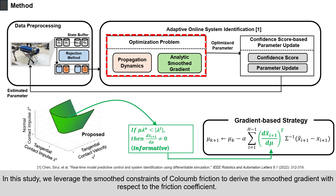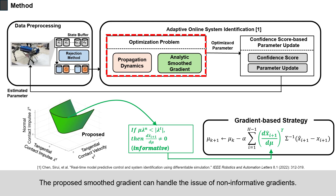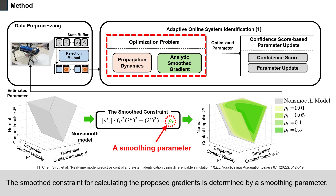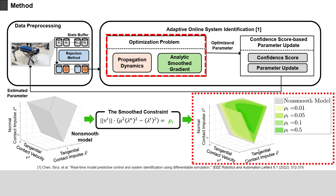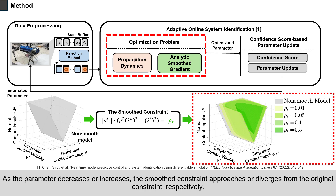In this study, we leverage the smooth constraints of Coulomb friction to derive the smoothed gradient with respect to the friction coefficient. The proposed smoothed gradient can handle the issue of non-informative gradients. The smoothed constraint for calculating the proposed gradients is determined by a smoothing parameter. As the parameter decreases or increases, the smoothed constraint approaches or diverges from the original constraint, respectively.